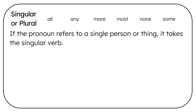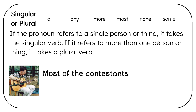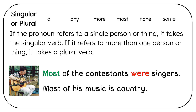If the pronoun refers to a single person or thing, it takes a singular verb. If it refers to more than one person or thing, it takes a plural verb. Most of the contestants were singers — most is referring to contestants, which is plural, so we use were. Most of his music is country — most is referring to music, which is singular, so we use is.